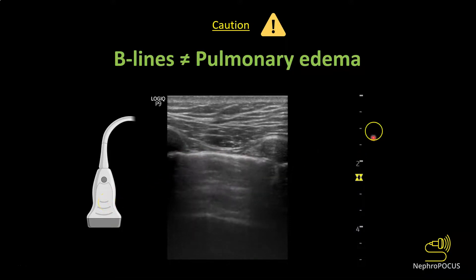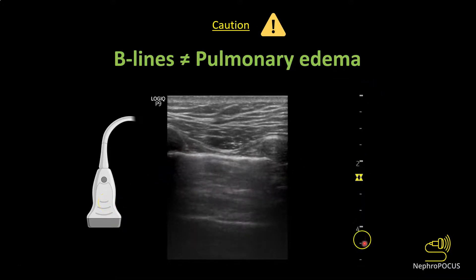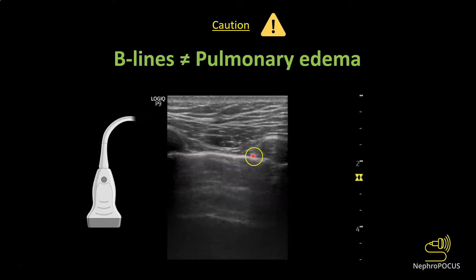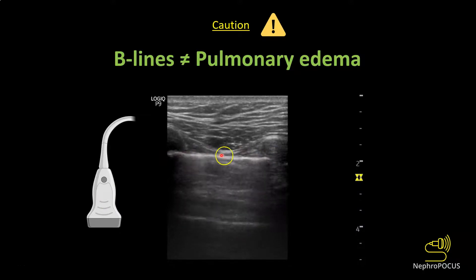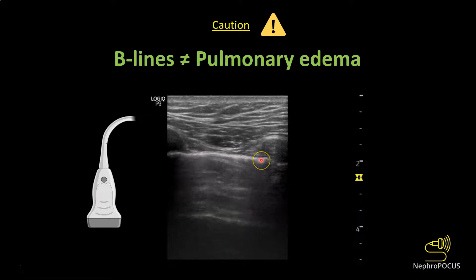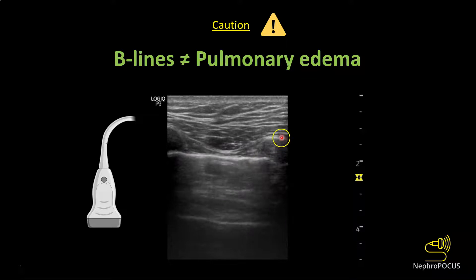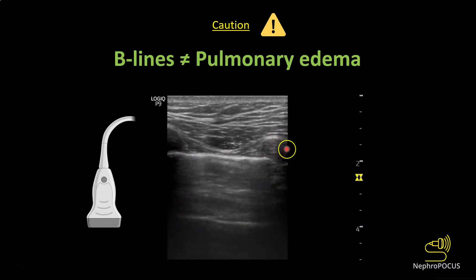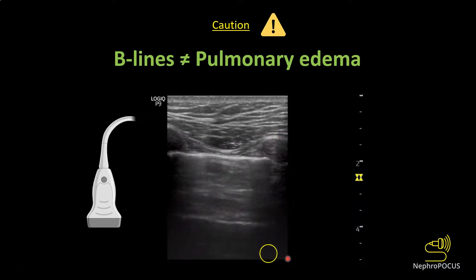If you want to assess pleural characteristics more closely, use a linear transducer or vascular probe. With less depth and higher resolution you can see the nice shimmer of the pleural line. This is a normal pleural line which is sliding; these are ribs with rib shadows, and you can see one A line here.